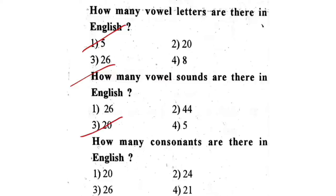Next question: How many consonants are there in English? First one, 20. Second one, 24. Third one, 26. Fourth one, 21. The correct answer is fourth one — 21.